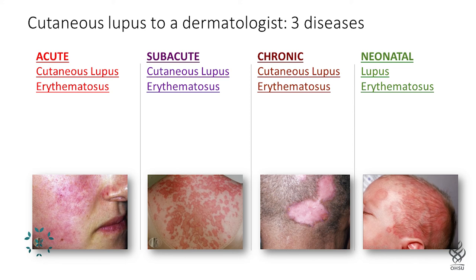There's subacute cutaneous lupus, which tends to be more long lasting, sometimes comes with symptoms of systemic lupus, and sometimes just the rash comes alone. There's chronic cutaneous lupus, where skin manifestations tend to come on, stay for a very long time, and be scarring — these can happen with systemic lupus or by themselves. And then there's neonatal lupus, where the skin manifestations happen independently.